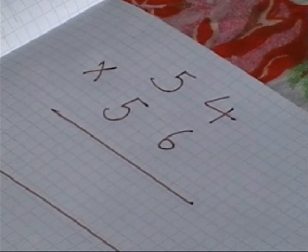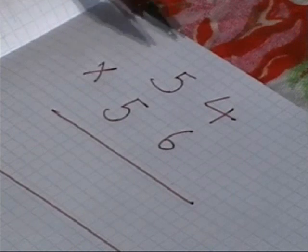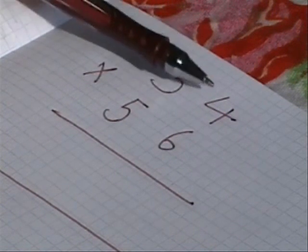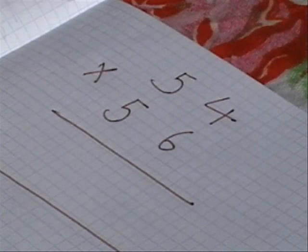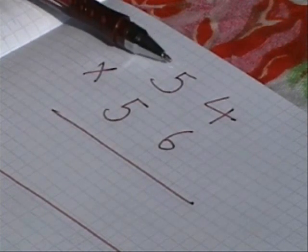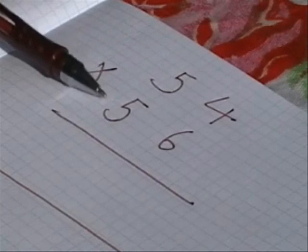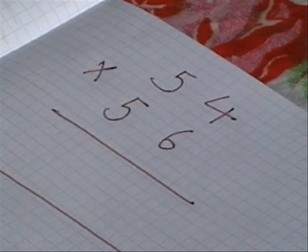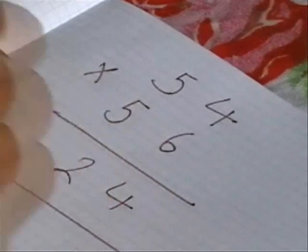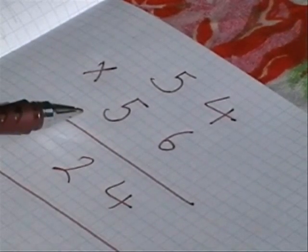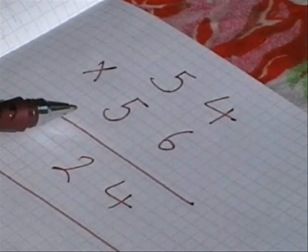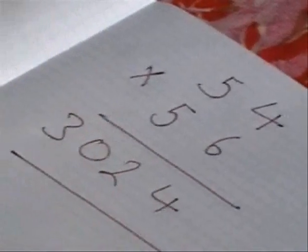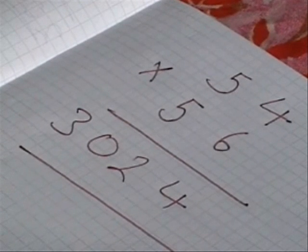We have 54 times 56. We notice that our first rule's obeyed, where 4 and 6, when added together, is 10, and we notice that in the tens column, they both share the same value, which is 5. So, 6 times 4 is 24, so I put my 24 down. I've got the number 5. The next digit after 5 is 6, so 5 times 6 is 30, and there, my answer is 3024.